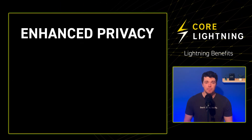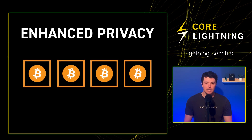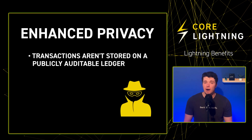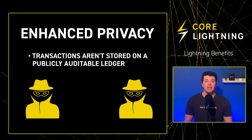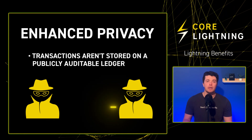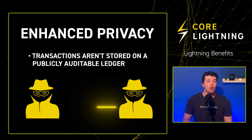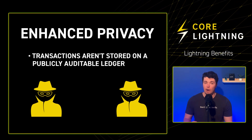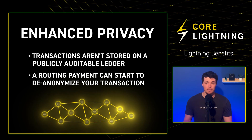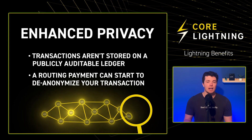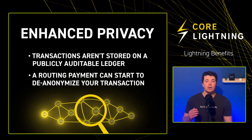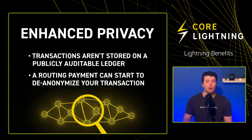Enhanced privacy: the absence of a blockchain means transactions aren't stored on a publicly auditable ledger. If you have a private channel open with a peer and the channel is limited to the two users involved in the transaction, only you two will be aware of it — no one else on the network will know it occurred. However, using a routing payment can start to de-anonymize your transaction. It's best to assume your transaction could be tracked and potentially traced back to you. We'll discuss steps to enhance privacy while using the Lightning Network in a later video.